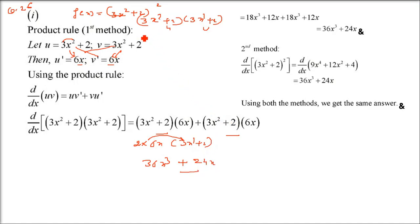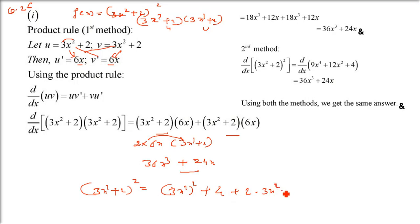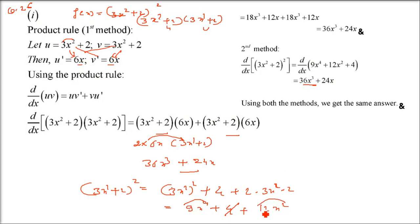Now by the normal method, expand using (a+b)² formula: (3x²+2)² = 9x⁴ + 12x² + 4. Now differentiate: 4 → 0; derivative of 12x² is 24x; derivative of 9x⁴ is 36x³. So the result is 36x³ + 24x — exactly the same as the product rule result. Both methods give the same answer.